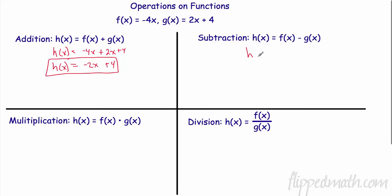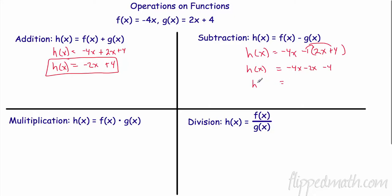Subtraction is very similar. So my new function h of x is going to be my f of x, negative 4x, minus — and I'm going to put this in parentheses because I'm subtracting the whole thing — 2x plus 4. The big deal here is this is like distributing a negative 1; that's why I put the parentheses around it. A lot of kids forget that, and that's where their mistakes happen. So negative 4x, negative 1 times 2 is negative 2x, negative 1 times 4 is negative 4. So h of x, subtracting f of x minus g of x, gives me negative 6x minus 4.